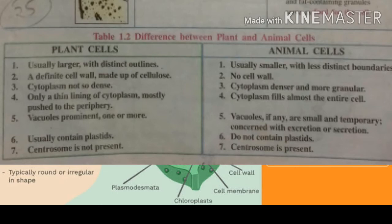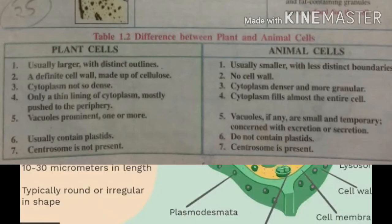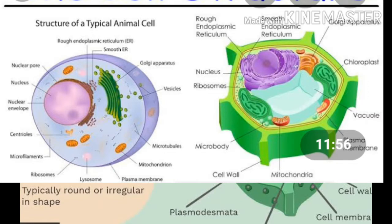In animal cells, vacuoles are either absent or very small. In plant cells, usually a large central vacuole lies in the center. In animal cells, centrosomes are present, but in plant cells they are usually absent. In animal cells, plastids are absent, while in plant cells plastids are present. In animal cells, photosynthetic pigments are generally absent, but in plant cells chlorophyll and carotenoids are present.